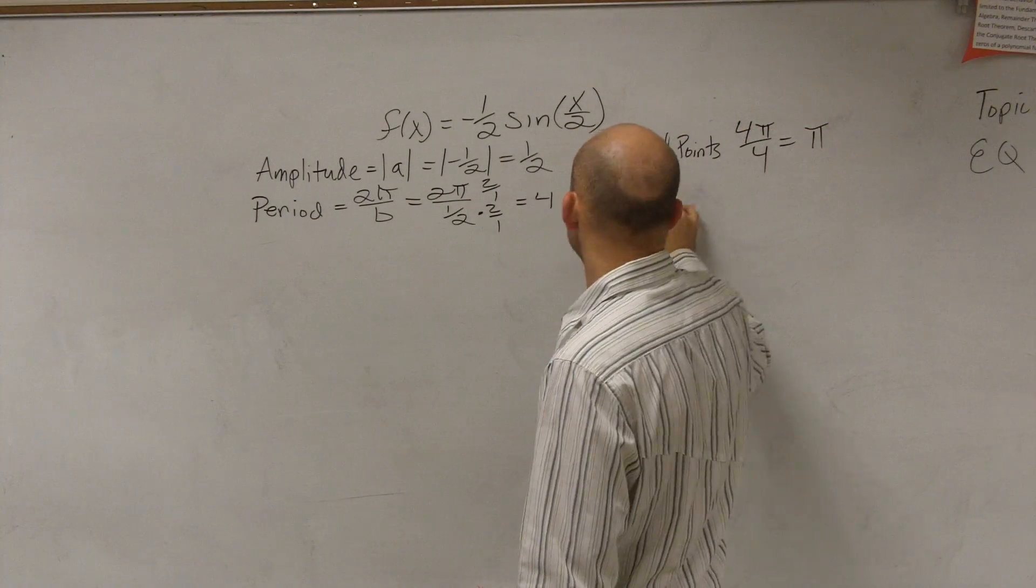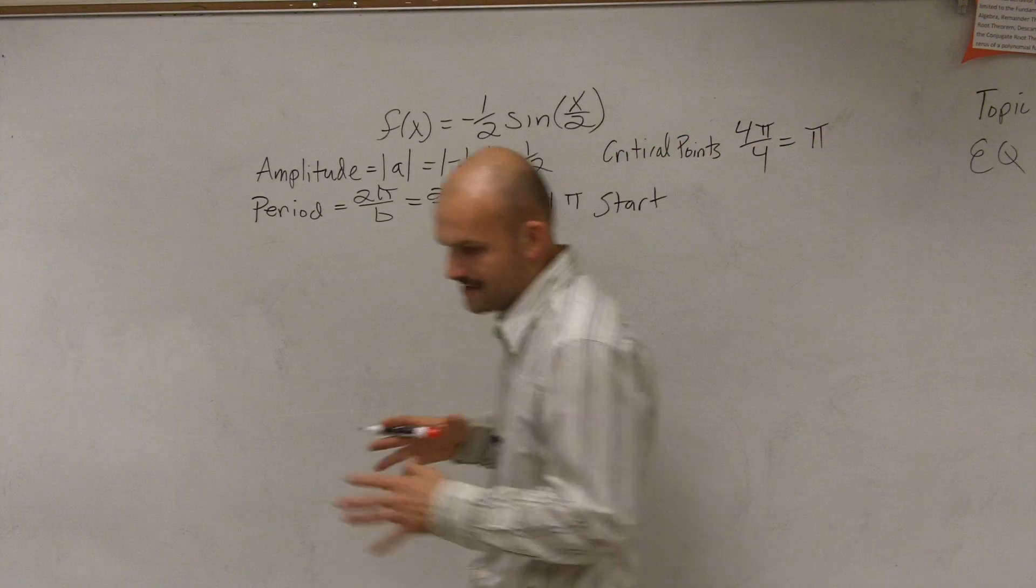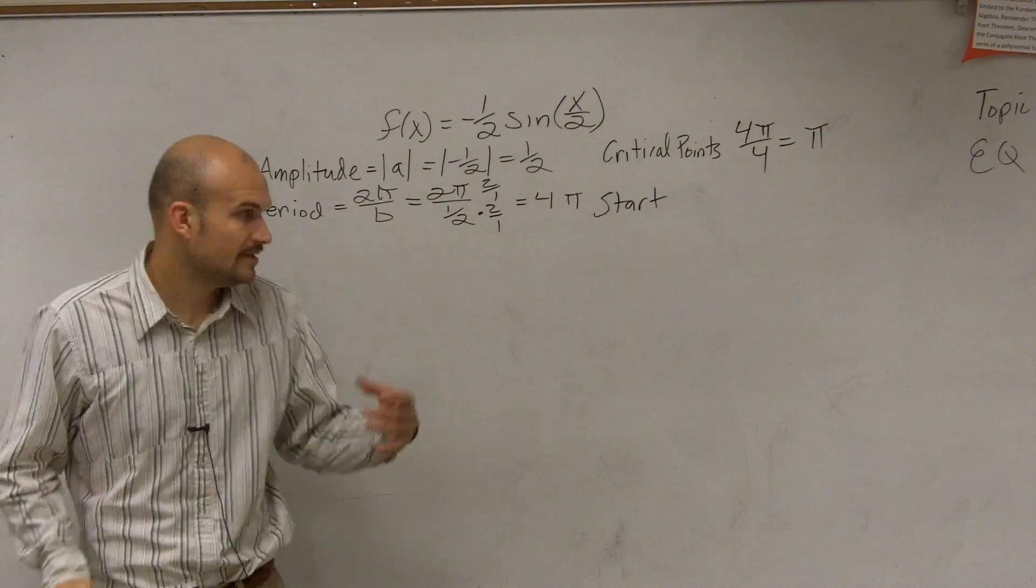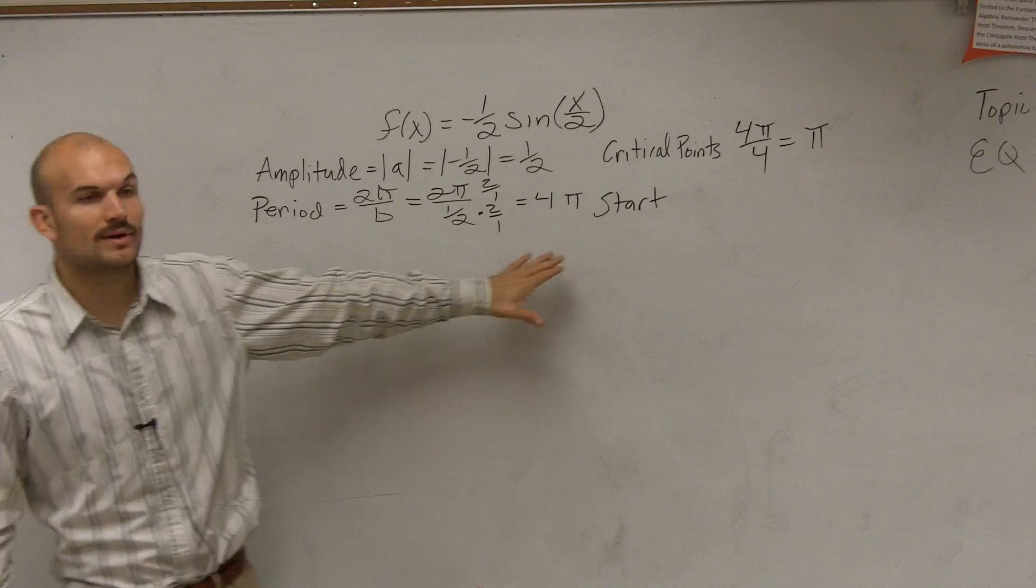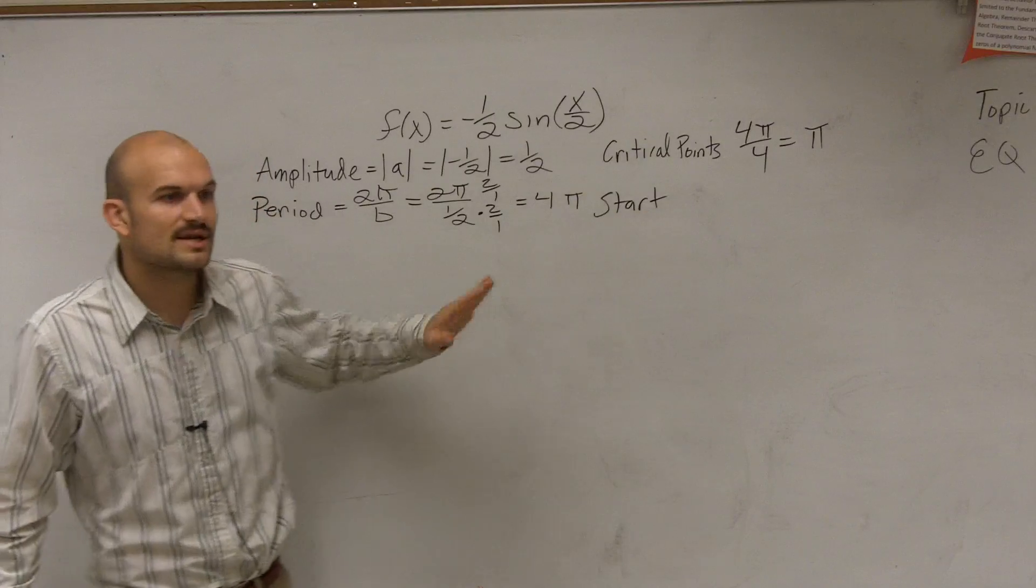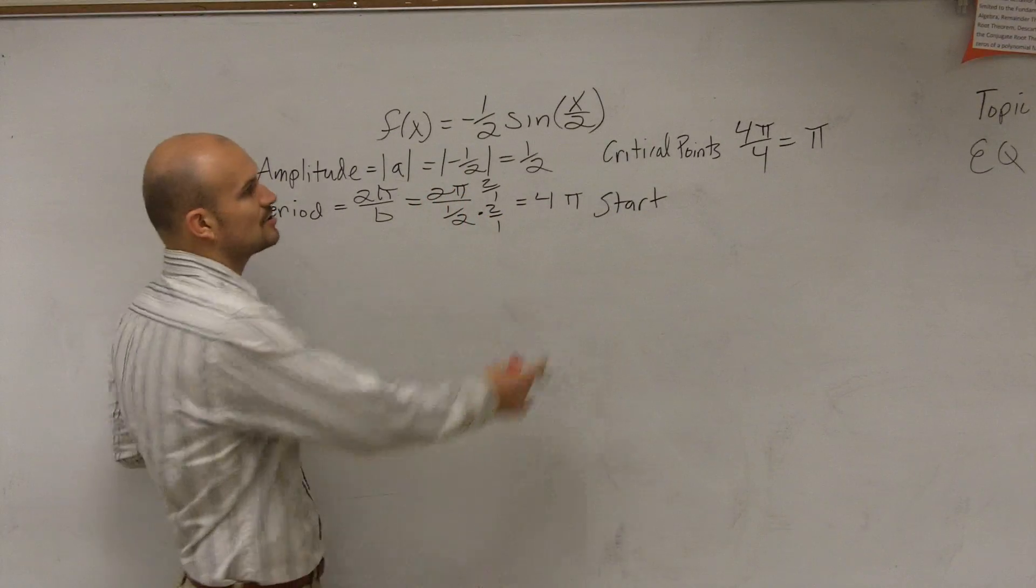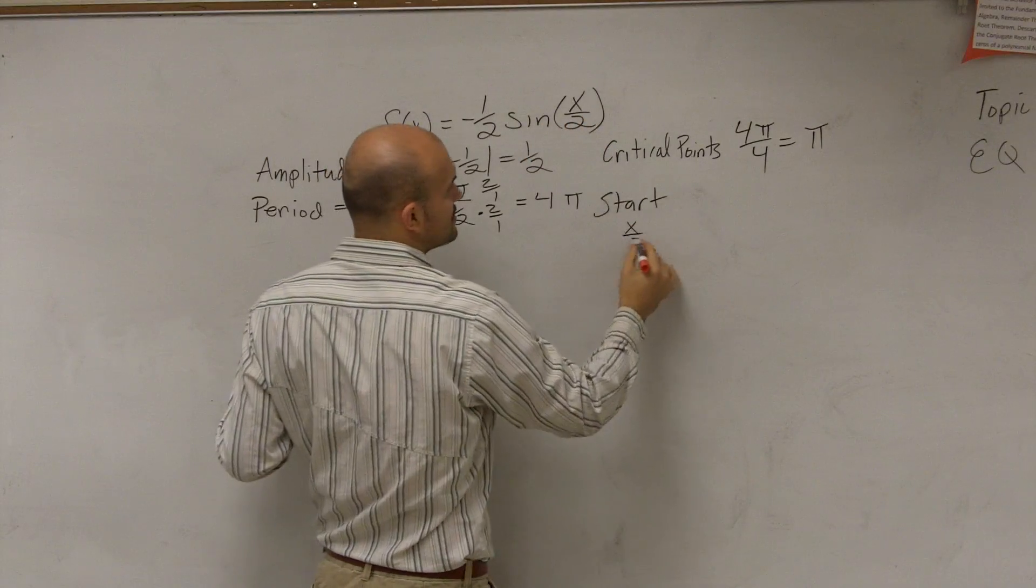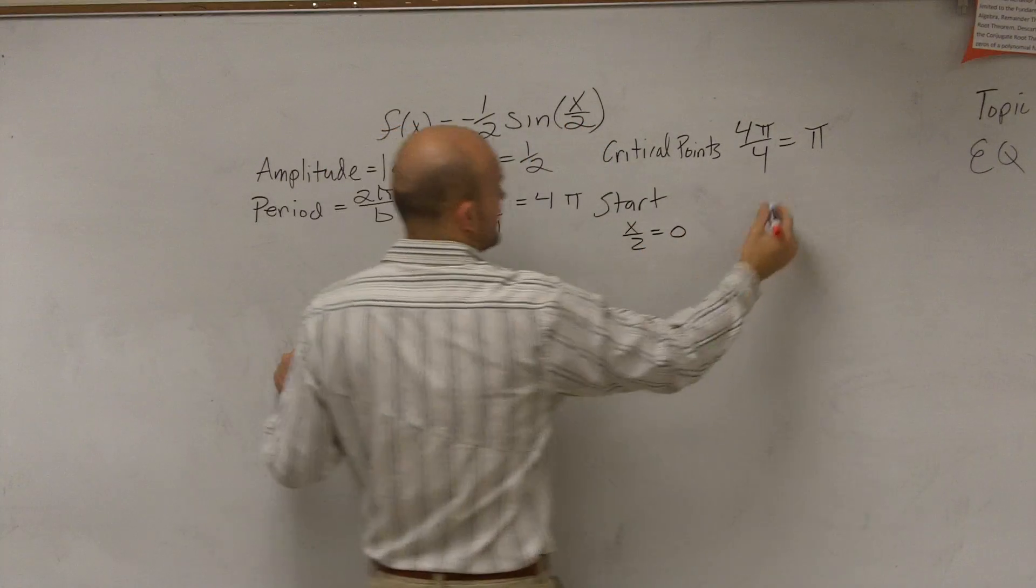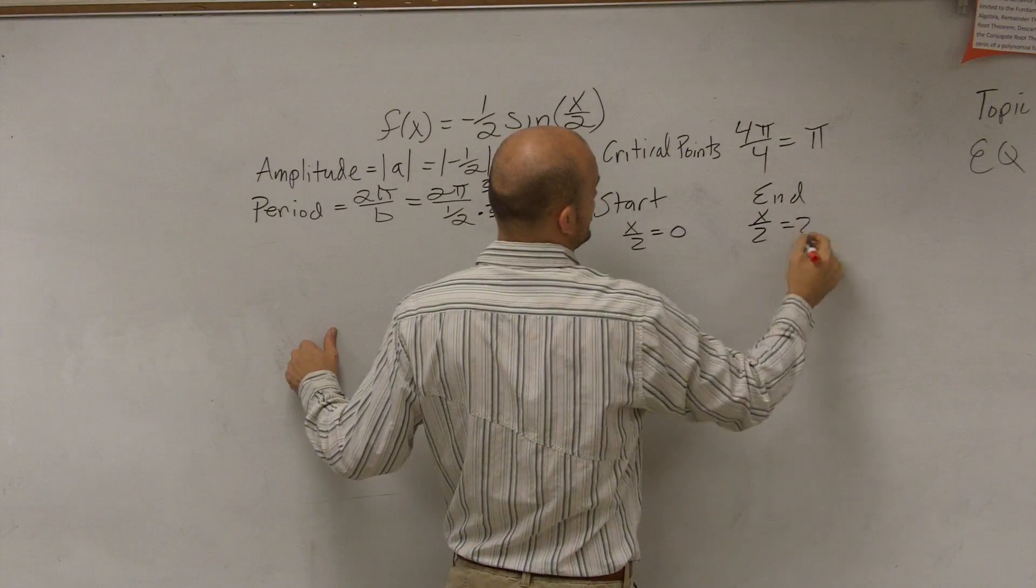Then, the next thing we do is when we started our graphs, when we started graphing the parent graphs, we graphed one period. And our one period was from zero to 2π. So what I want to do is if there's any transformations in my graph, I want to see where my graph for the first period is going to start and the end. So what you do is you take whatever's inside your function for the start and you set that equal to zero. And then for the end, you're going to take whatever's inside your period and set that equal to 2π.